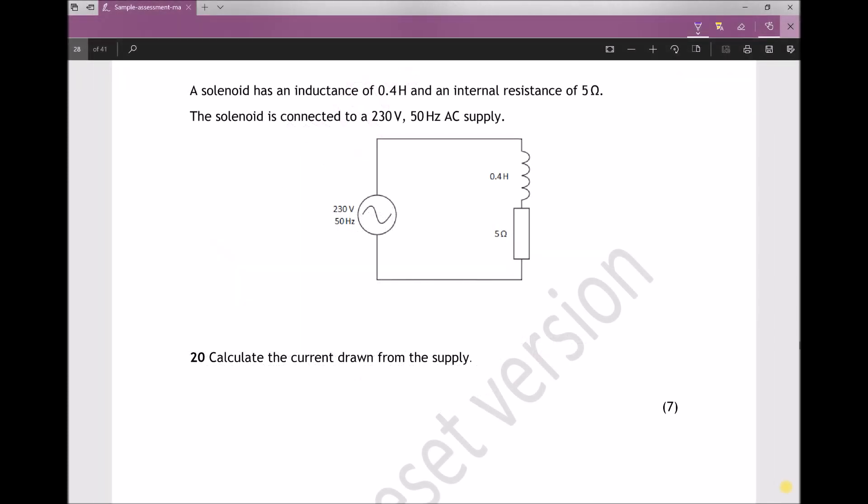The final question states: a solenoid has an inductance of 0.4 Henry and an internal resistance of 5 ohms. The solenoid is connected to a 230 volt 50 hertz AC supply, and then we have a diagram of the configuration there.